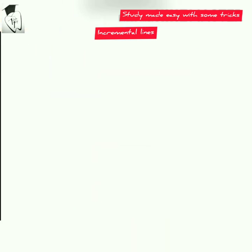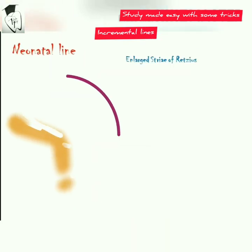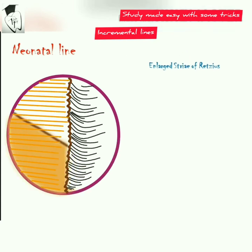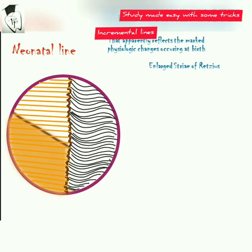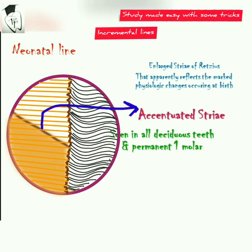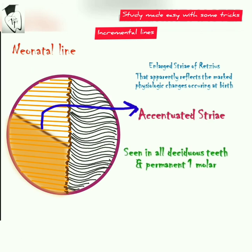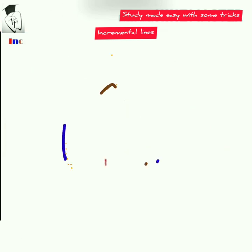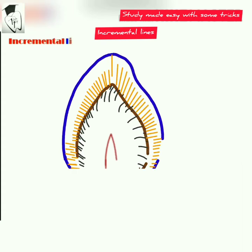Now talking about the neonatal line: it is an accentuated or enlarged Stria of Retzius that apparently reflects the marked physiologic changes occurring at birth. It is seen in all deciduous teeth and permanent first molars.